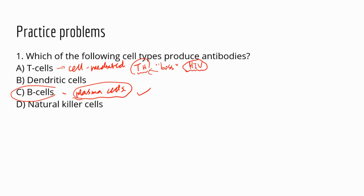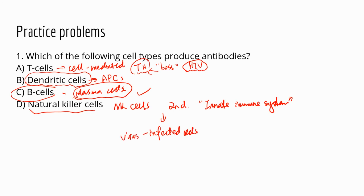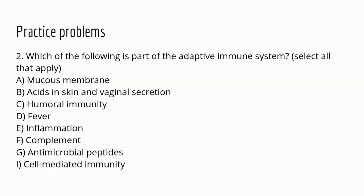Dendritic cells are antigen presenting cells that present part of the antigen to cytotoxic T cells, helping T cells recognize what antigen to target. Natural killer cells are part of the second line of defense within the innate immune system. Their targets are virus-infected cells and cancer cells.